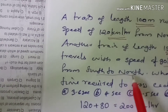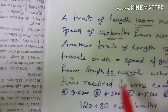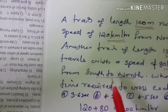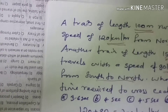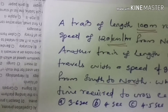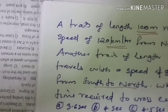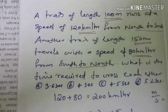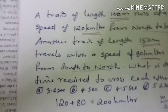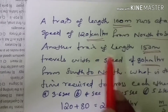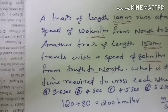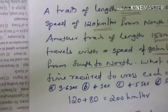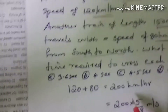Now since the trains are crossing in opposite directions, we add their speeds. The relative speed is 200 km per hour.